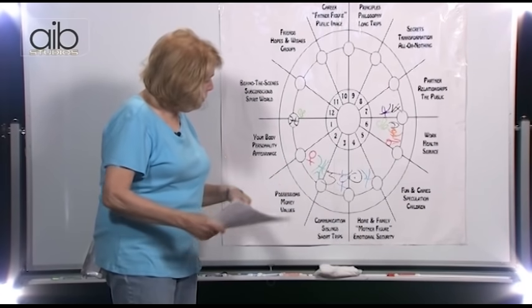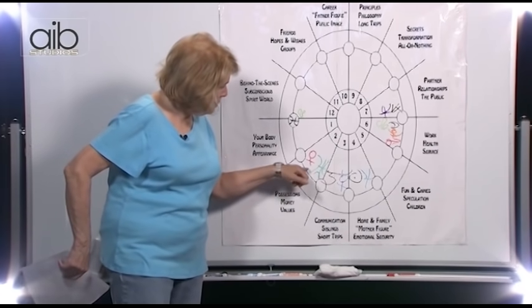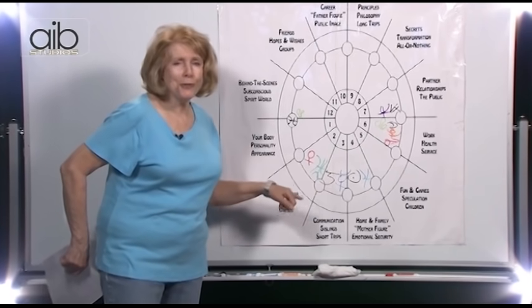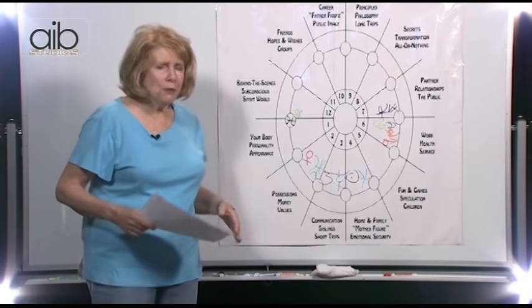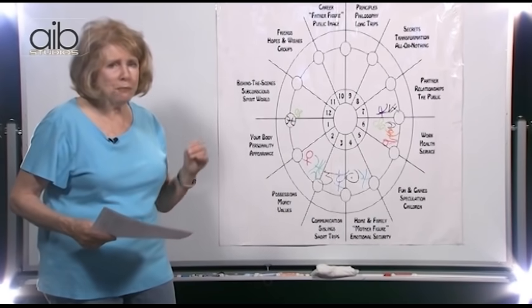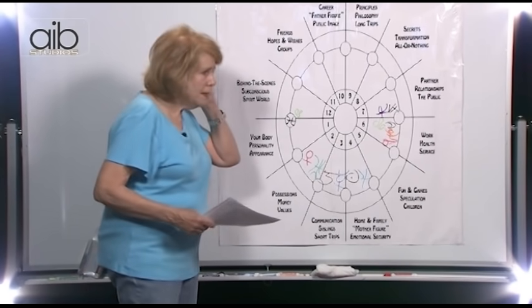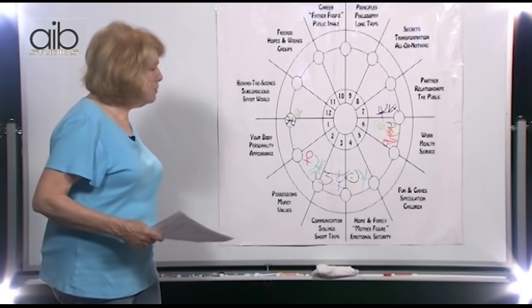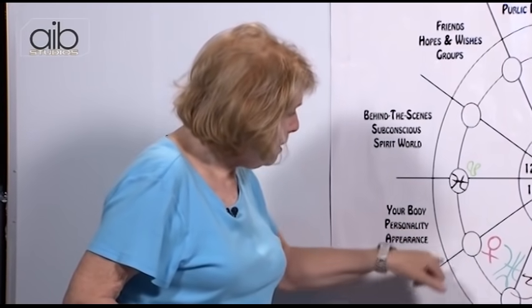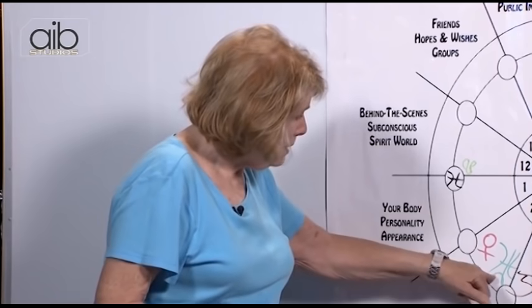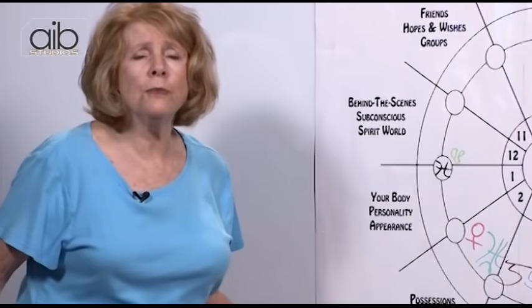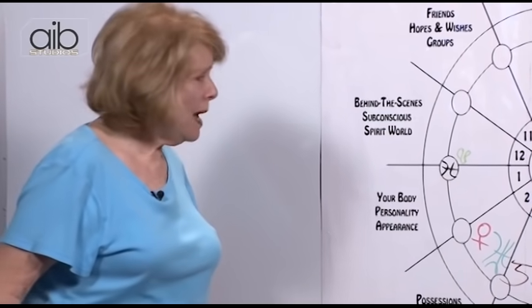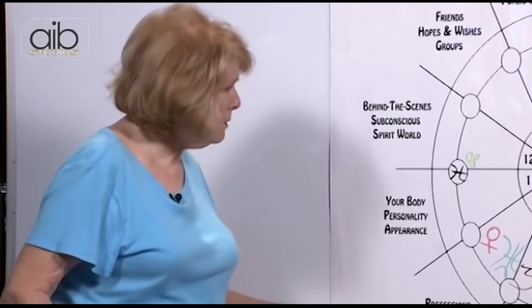Uranus is also in that second house. It's hidden behind the third house. And so, Uranus is saying, be unique in what you do and the way you earn your money. Be different, be creative, be your own person. And so, that's exactly what he does. Because it's on the hidden side of the third house, look at the kind of music he creates. He's a master of several instruments and several styles.